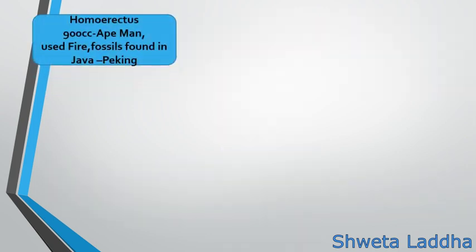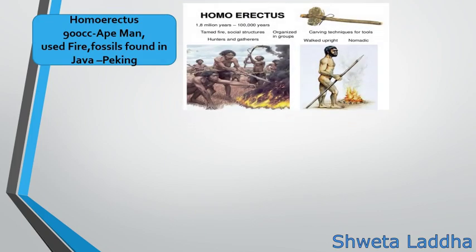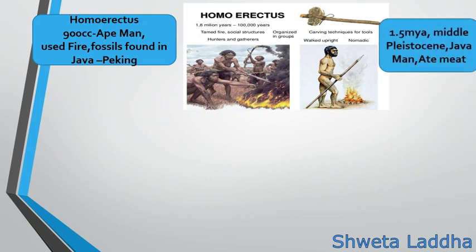After Homo habilis came Homo erectus, more intelligent than the earlier ones. They had a cranial capacity of 900 cc and are also called the 'ape man.' They were believed to be the first to use fire. Fossils are found in Java and Peking, so they are also called Java man and Peking man. They were hunters and gatherers, organized in groups, walked upright, led a nomadic life, and ate meat. They lived in the Middle Pleistocene epoch.